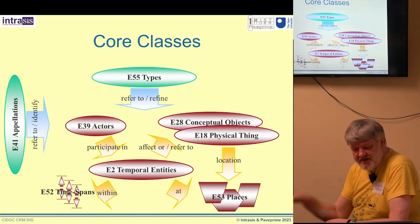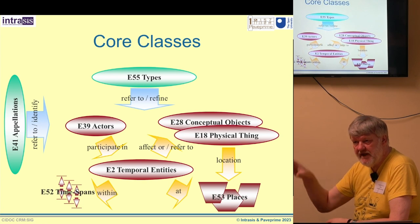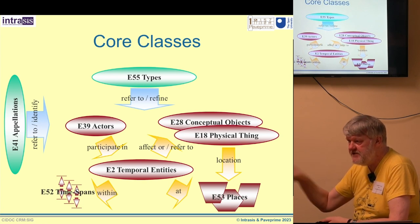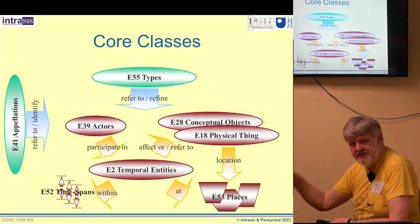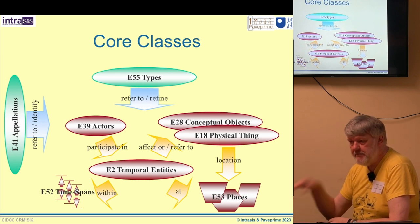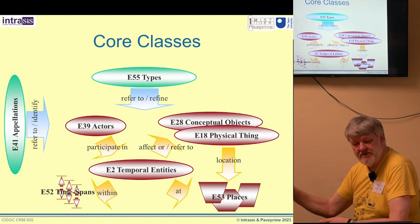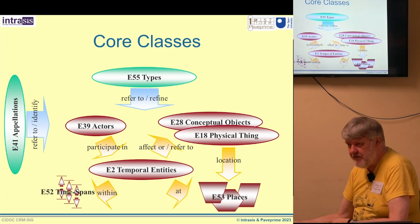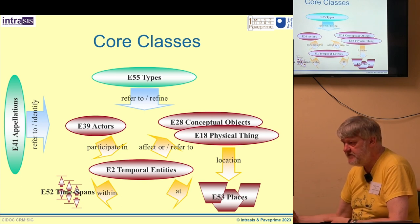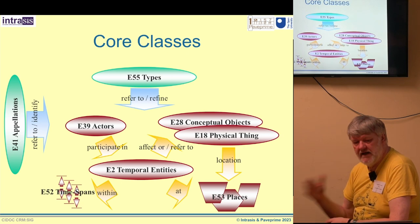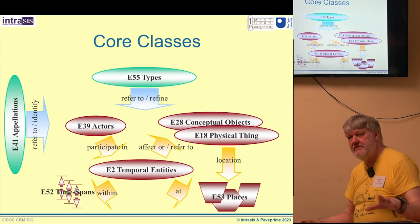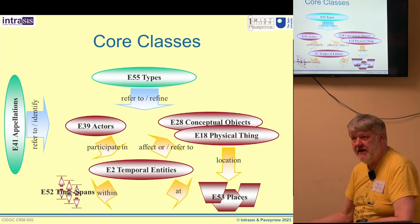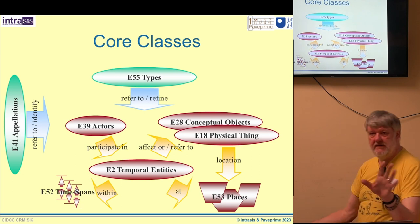Then we've got places, which are the mathematical constructs of where something is. You can't take a photograph of a place; you can only take a photograph of the matter that's in a place at a particular point in time. Temporal entities — the events are the linked time — and we allow ourselves actors: individuals or groups who do stuff. We have appellations which can be applied to everything. Appellations are themselves conceptual objects, so you can have names for names, and we can categorize everything using E55 types, which are also conceptual objects, so you can have types of types — which is pretty useful.